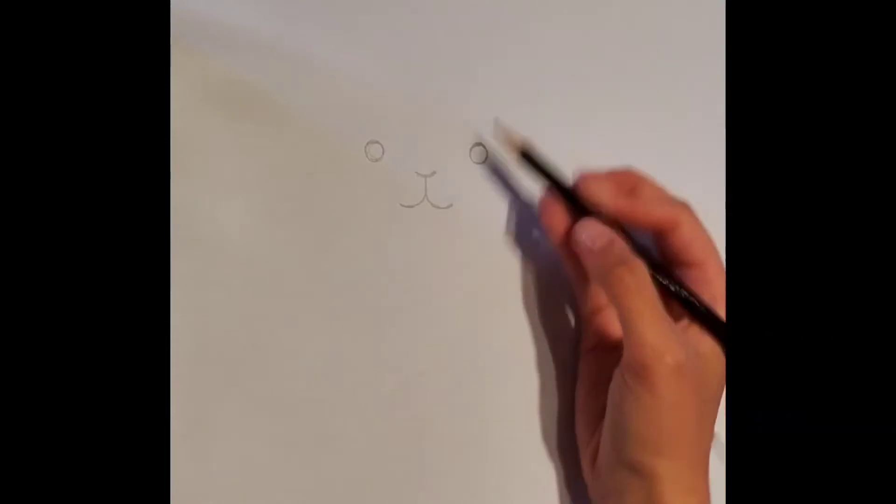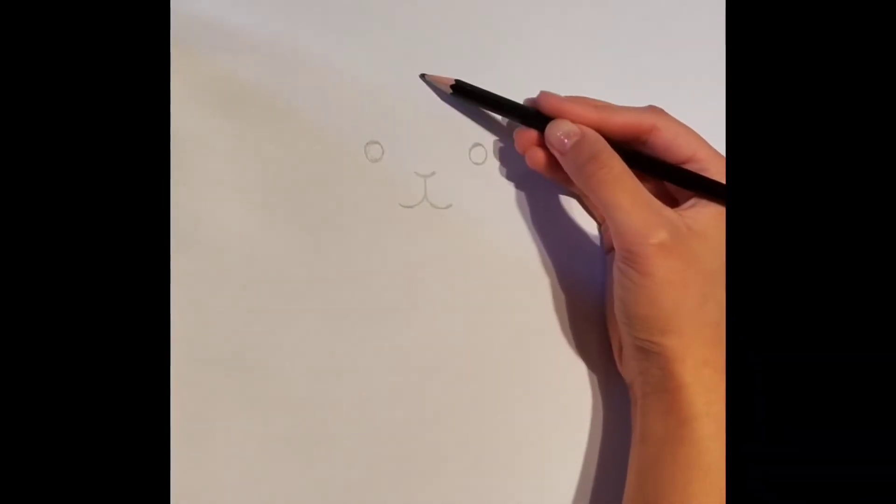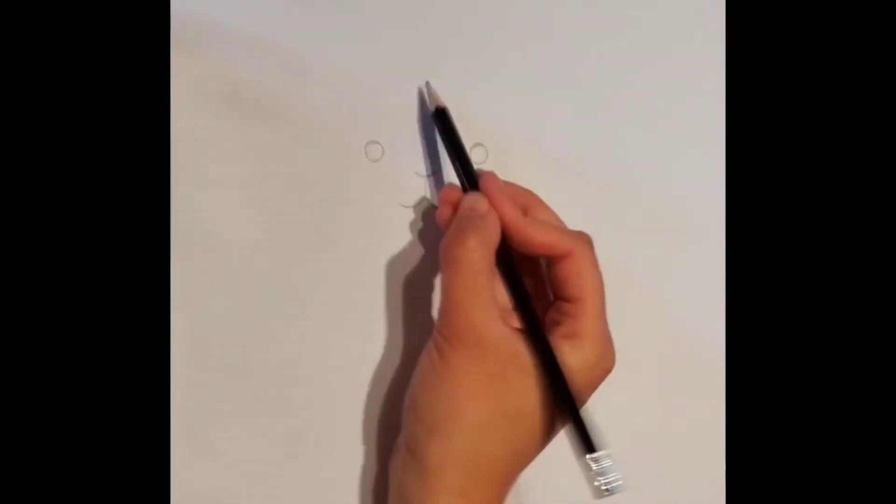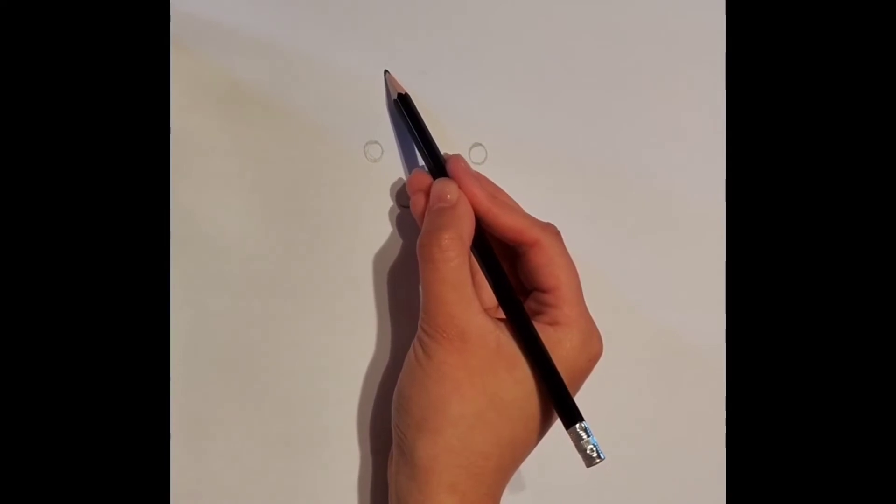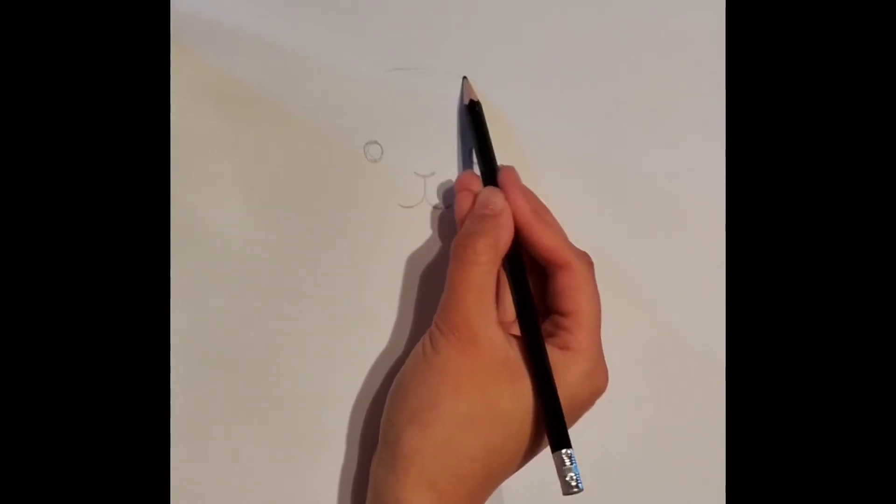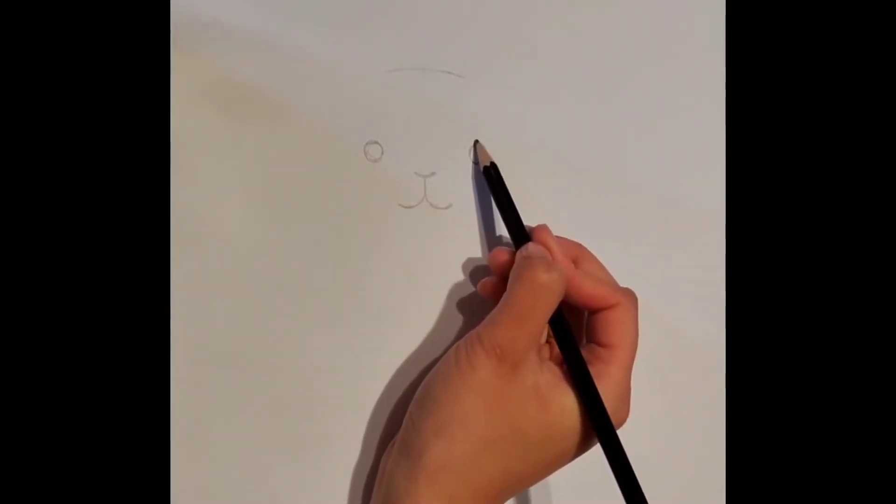Now, again from the tip of the nose, we are going to measure out the head of the cat. Start off by drawing a curve like so, which extends to both sides of the eyes.